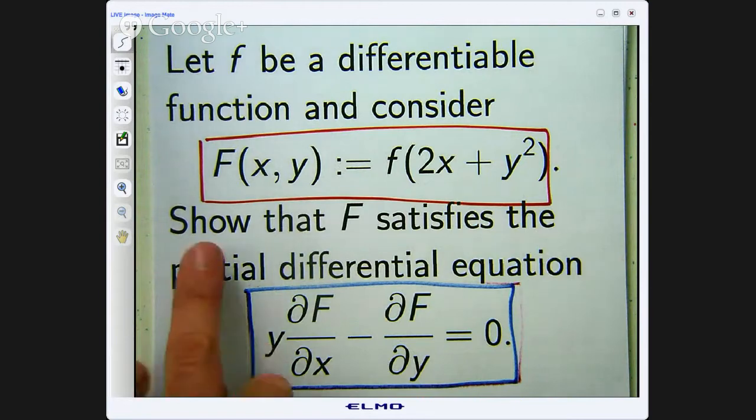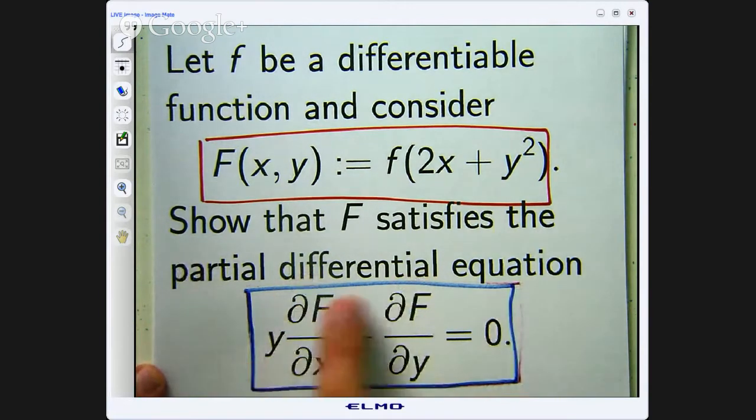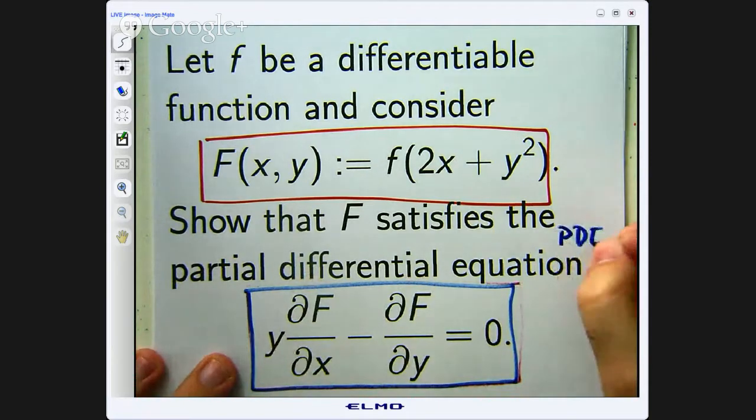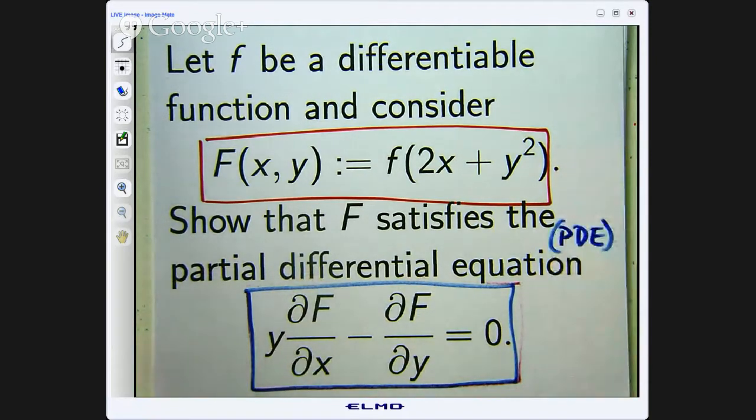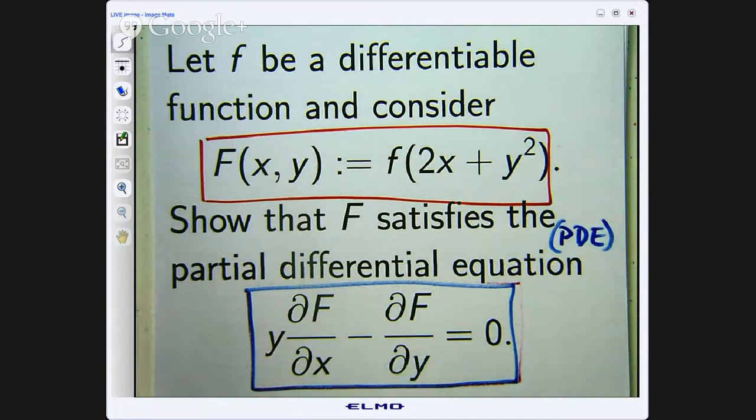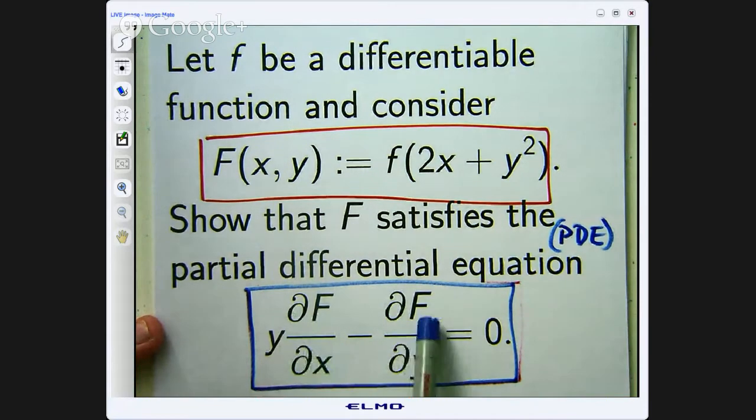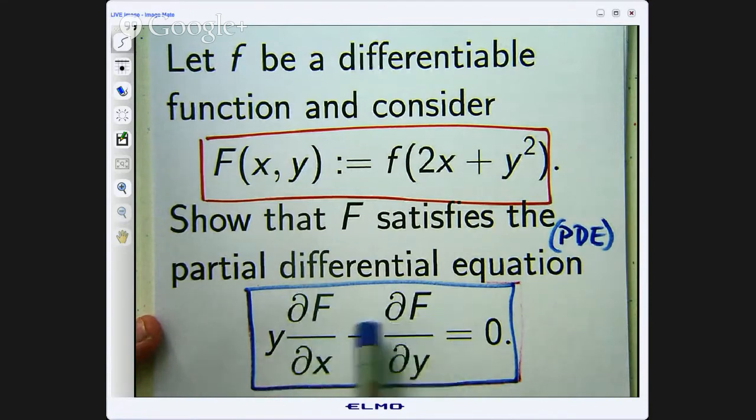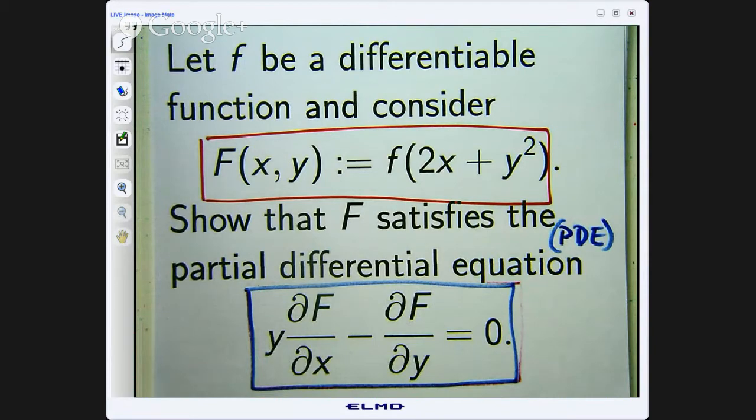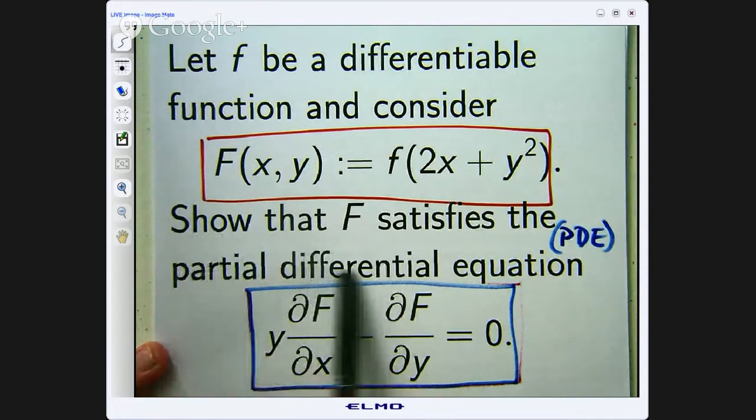This blue box expression down here is a partial differential equation or PDE and it basically is just like any other equation. It has an equal sign and it has some partial derivatives in it. You combine these in some way and we say that this left hand side must equal 0. So how do we actually do what the question is asking us? Show that big F satisfies the partial differential equation given by this.